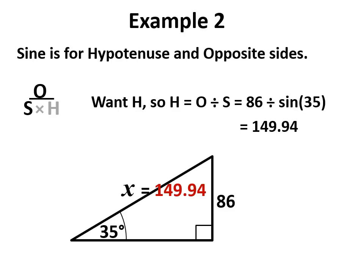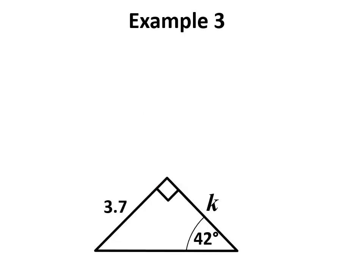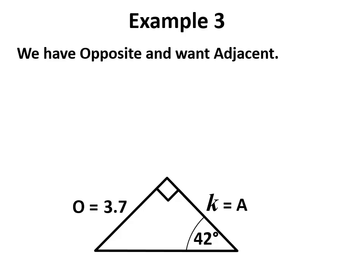Another example: we have a length 3.7, we're asked for another length we've called k, and we have an angle of 42 degrees. First step always to label, so we have opposite and adjacent.